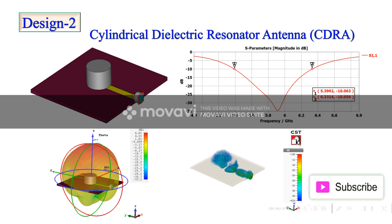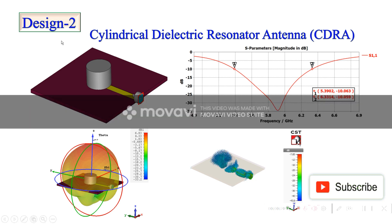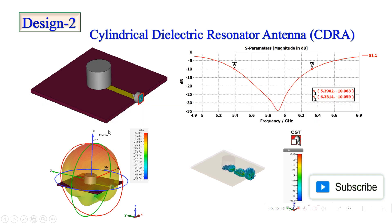In this video we'll discuss about the Cylindrical Dielectric Resonator Antenna, that is CDRA. Those who want to watch Rectangular Dielectric Resonator Antenna (RDRA) can see the design-one video in this Antenna World channel. Now we'll discuss about CDRA — it is called a Cylindrical Dielectric Resonator Antenna because the structure of the dielectric resonator is cylindrical in shape.